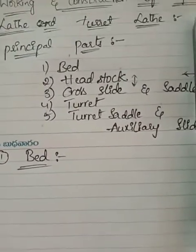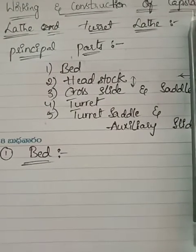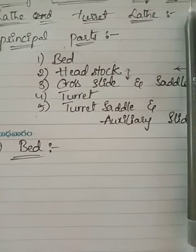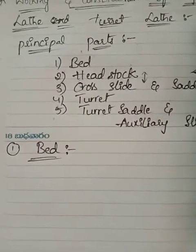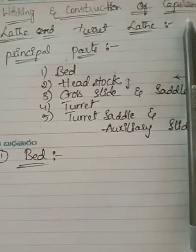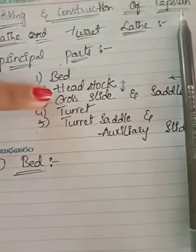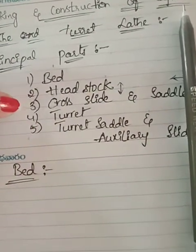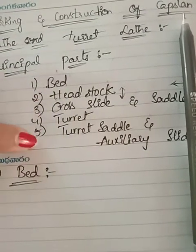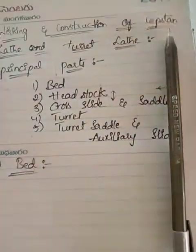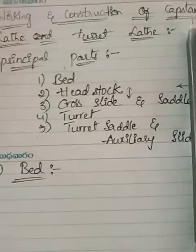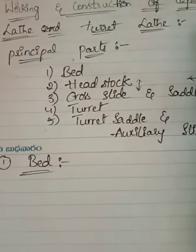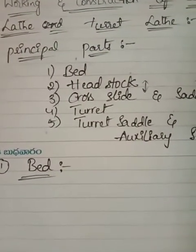Our first part is bed. What is meant by bed? Bed is nothing but a box-like casting. This box casting is accurate. It is a box-like cast iron structure having more rigidity and is designed to ensure perfect strength.